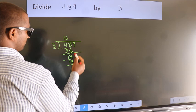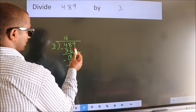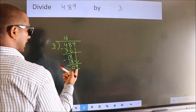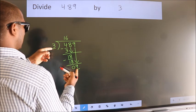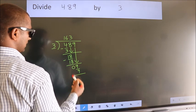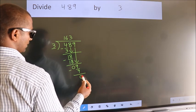After this, bring down the beside number. So 9 down. So 9. When do we get 9? In 3 table. 3, 3 is 9. Now we subtract. We get 0.